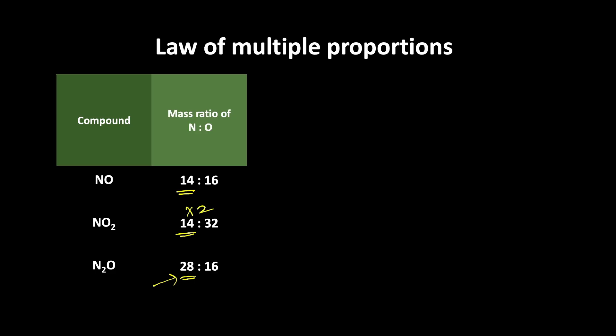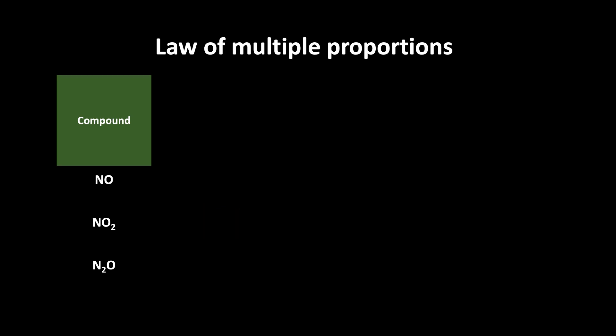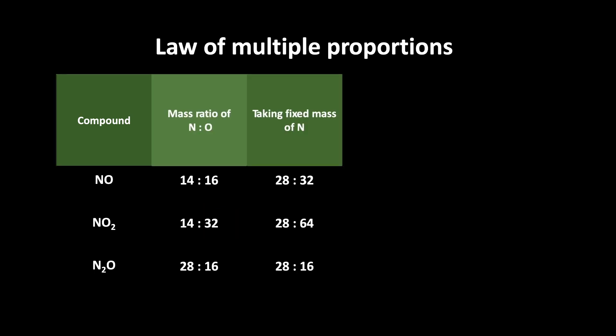We multiply the first two compounds by 2. If we are multiplying nitrogen by 2, we also have to multiply the mass of oxygen by 2 in both those cases. So taking the fixed mass of nitrogen as 28 across all three compounds — in NO the mass of oxygen becomes 32, in NO₂ the mass of oxygen becomes 64, and in N₂O it remains 16 as nitrogen was already 28.